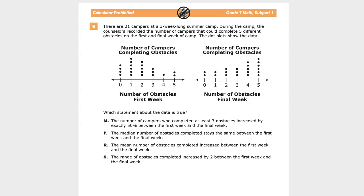Grade 7 math practice test for T and ready, question number 6 on a non-calculator section. There are 21 campers at a three-week-long summer camp. During the camp, the counselors recorded the number of campers that can complete five different obstacles on the first and final week of camp. The dot plots show the data.